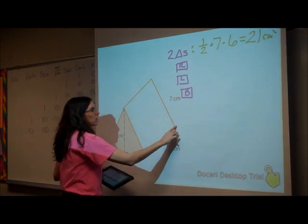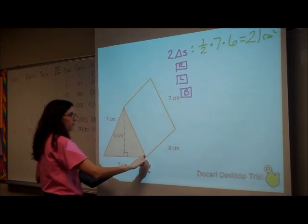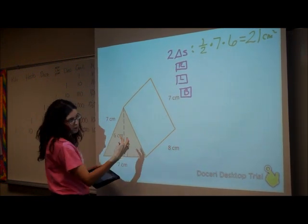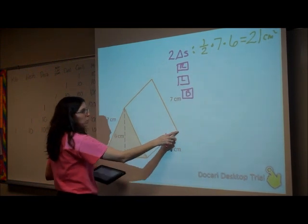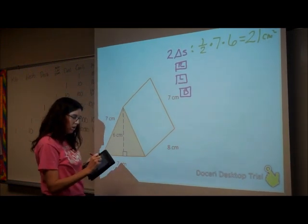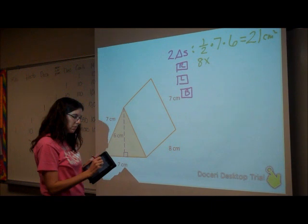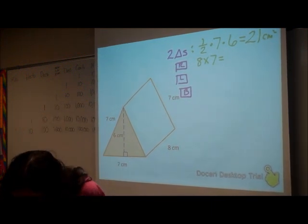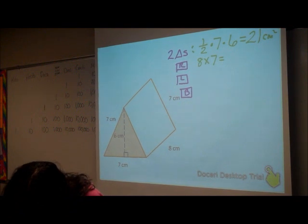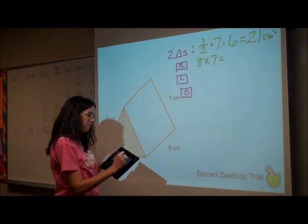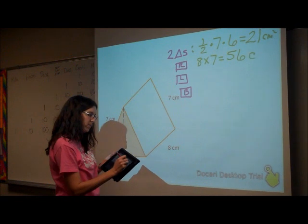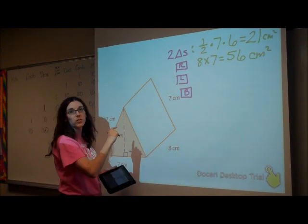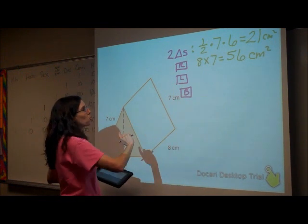Now, I want to look at this rectangle. Area of a rectangle is length times width, or base times height, and will be eight by seven. So that area will be eight times seven, which is fifty-six. So eight times seven was 56, and it's centimeters squared still.